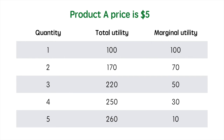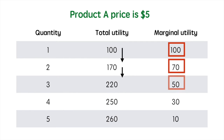The marginal utility is the difference between the total utility at that quantity of consumption minus the previous total utility. Since we are always increasing by one unit, we don't need to divide the marginal utility gain. The marginal utility as we consume our first unit is 100, given that total utility at quantity 0 is 0. Total utility increases to 170 as we consume the second unit, so the second unit adds 70 utils. After 3 units, total utility rises to 220, which is an additional 50 utils. This continues with the 4th, which brings 30 additional utils, and finally the 5th unit, which brings 10 additional utils.